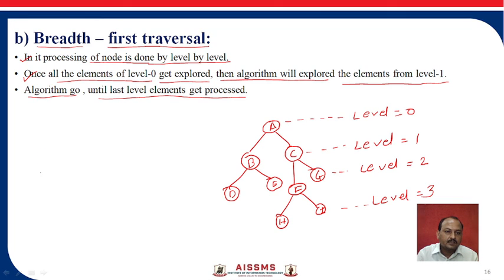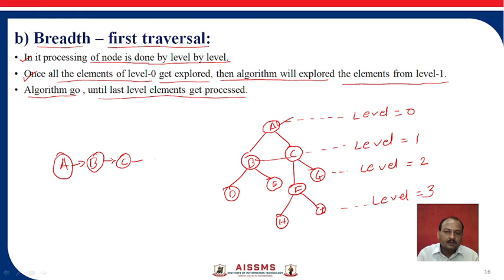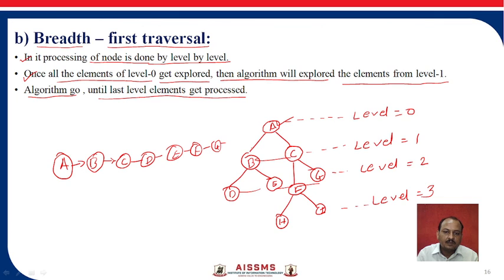In BFS, the sequence is level by level. First, level 0 is explored: A. Then level 1 is explored: B, C. Then level 2: D, E, F, G. Then level 3: H and I. This is the breadth first traversal.